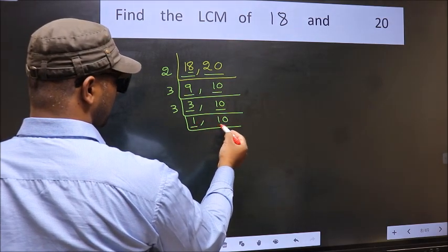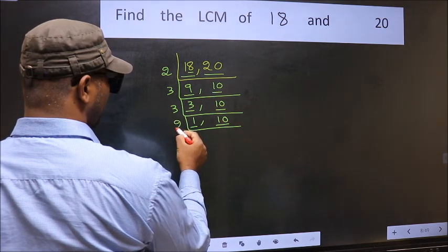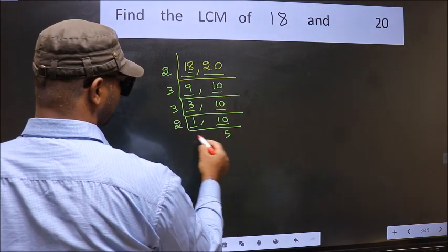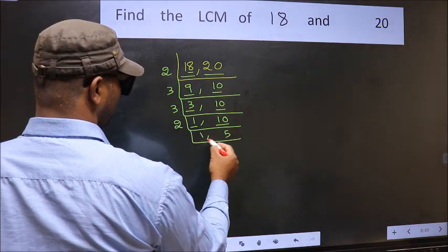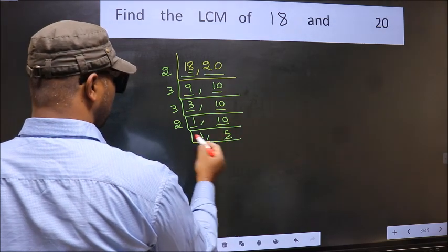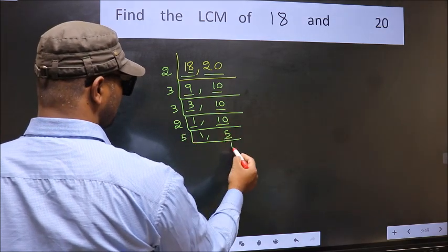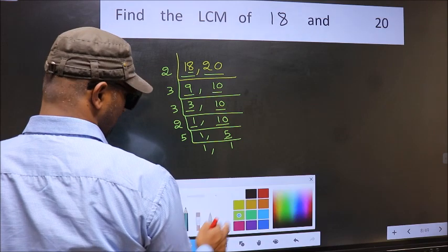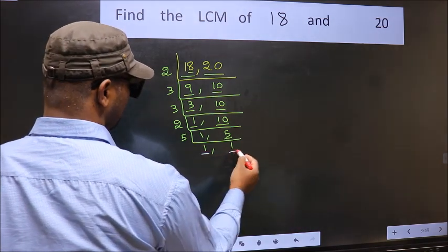So focus on the other number 10. 10 is 2 fives 10. Now we have 5. 5 is a prime number so 5 once is 5. So we got 1 in both the places.